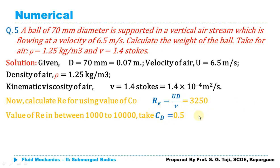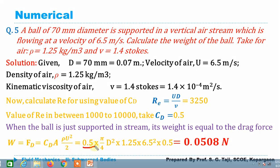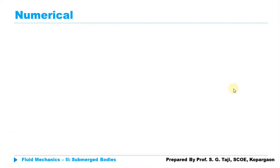We calculate the drag force using FD = CD × A × ρU²/2, and since the ball is in equilibrium, weight W equals the drag force. Substituting CD = 0.5, A = π/4 × (0.07)², ρ = 1.25 kg/m³, and U = 6.5 m/s, the weight of the ball comes out as 0.0508 N.